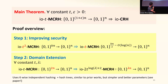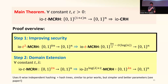Step two uses pairwise independent hashing to extend a large tree and shrink the input array. This is similar to prior works but simpler in the sense that while we use pairwise independent hashing, prior works had to use codes specifically tailored to this. I'll refer you to the paper for details. But I want to spend the rest of the time on step one, which is quite interesting because it's non-black-box and non-constructive.